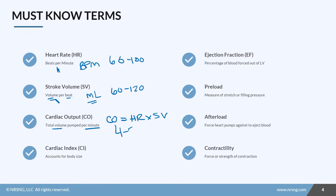For a 90-pound gymnast, 4 liters per minute might be plenty, but it would not be enough for a 300-pound wrestler. So we use cardiac index to account for the patient's size. We take the cardiac output and divide it by their body surface area. We want a cardiac index between about 2.5 to 4. A 300-pound wrestler with a cardiac output of 4 might have a cardiac index of about 1.5, which is definitely not enough.